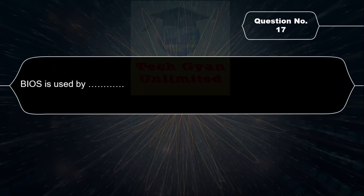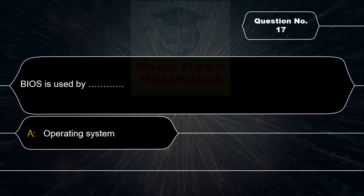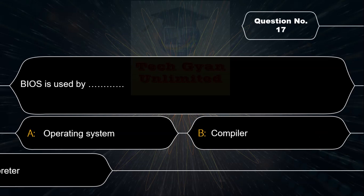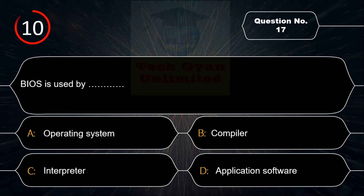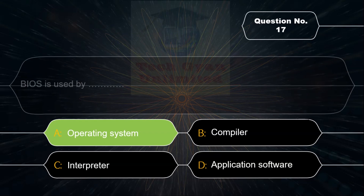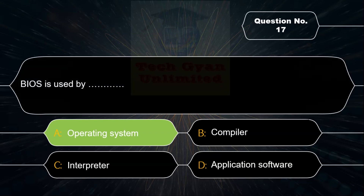BIOS is used by: Option A: Operating System, Option B: Compiler, Option C: Interpreter, Option D: Application Software. Correct answer is Option A — Operating System.